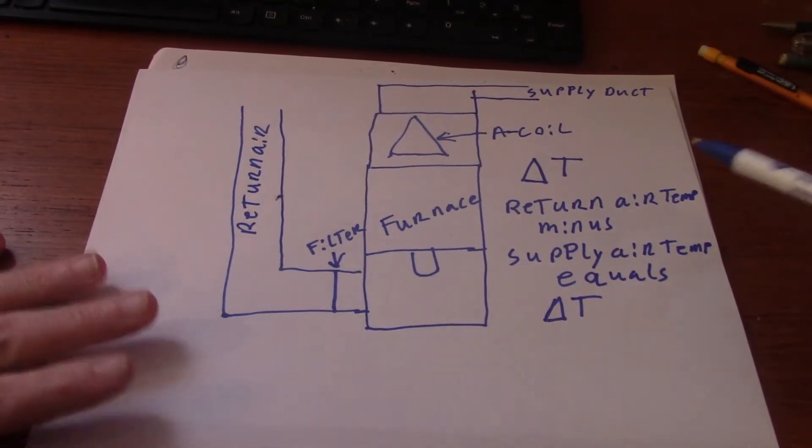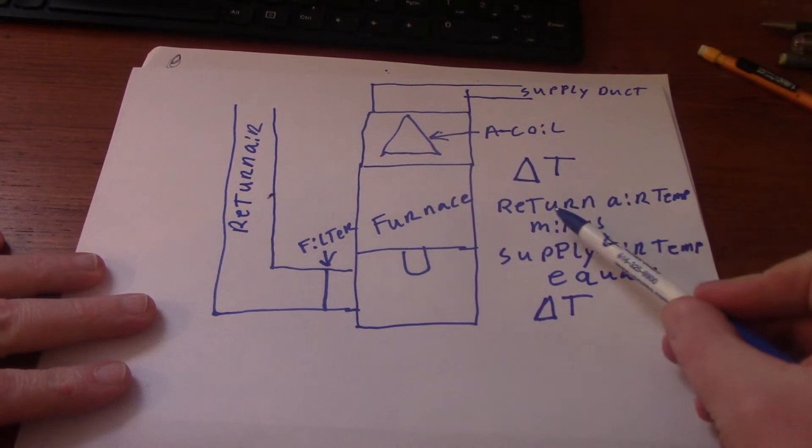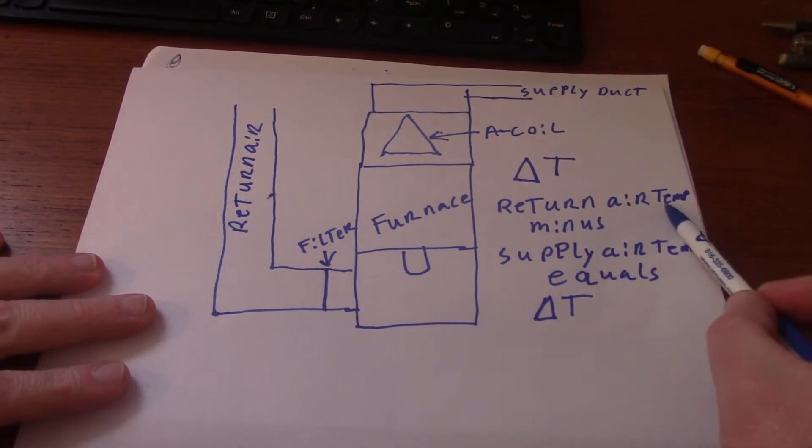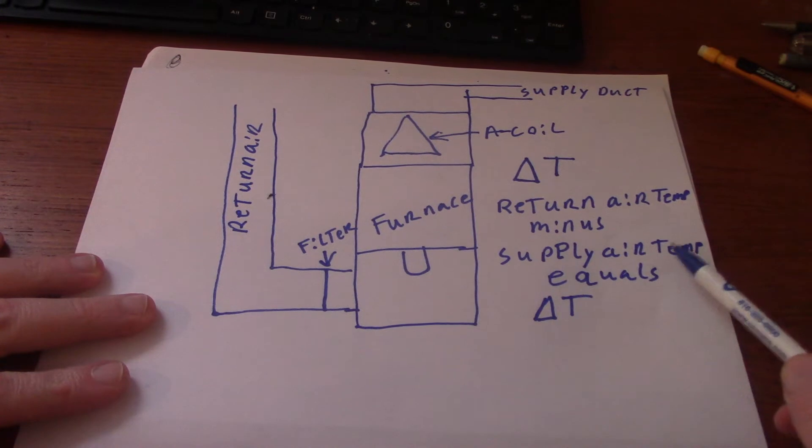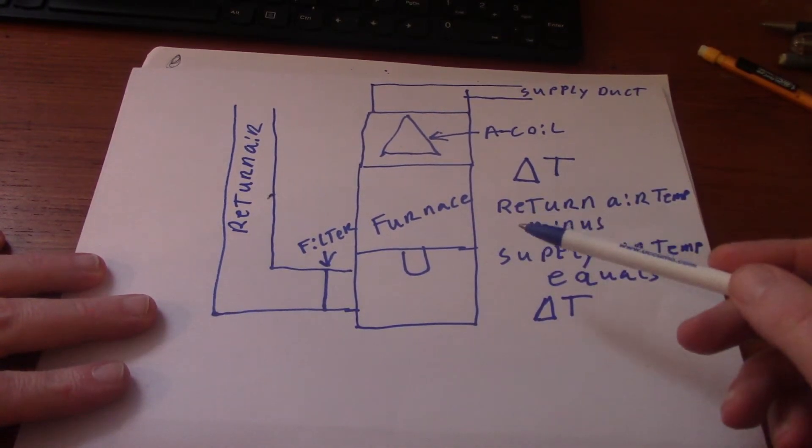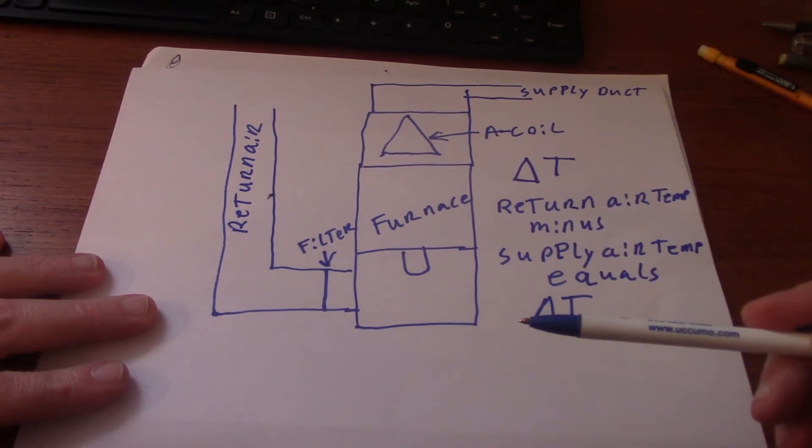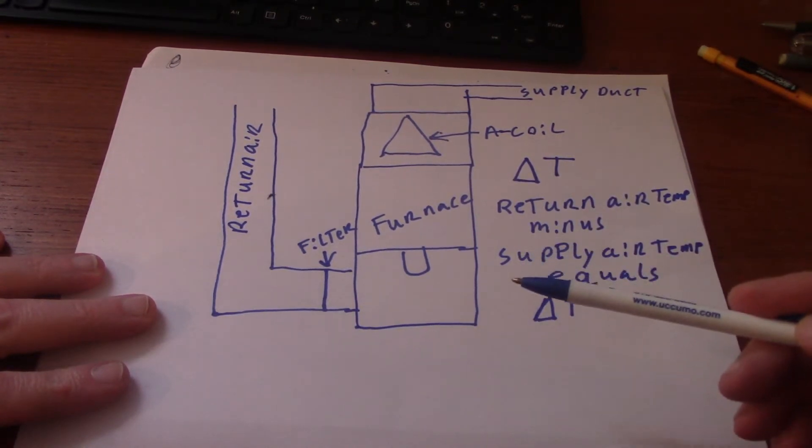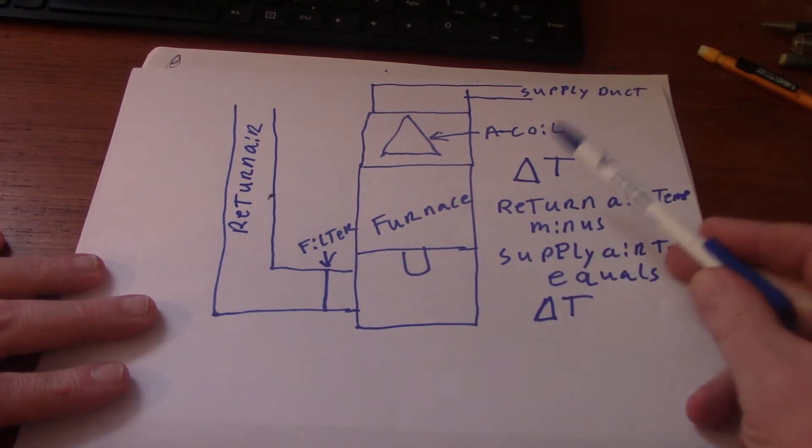To calculate it, you take your return air temperature minus supply air temperature will equal Delta T. This is different than evaporator Td. Some people may also call this temperature drop, but it's not the same as evaporator Td. It's Delta T.